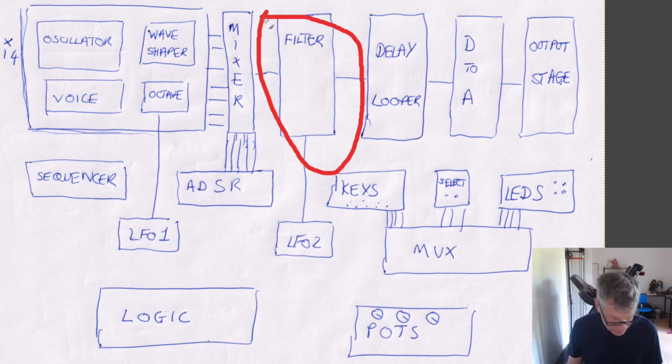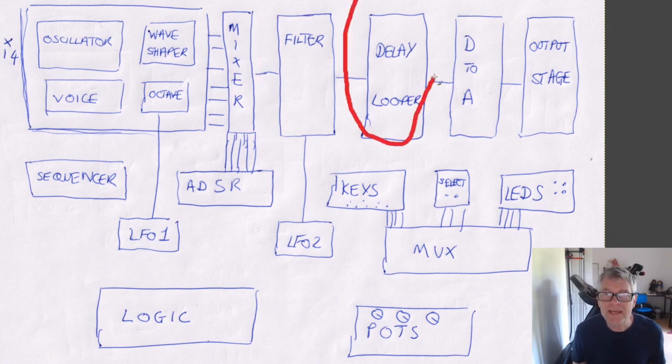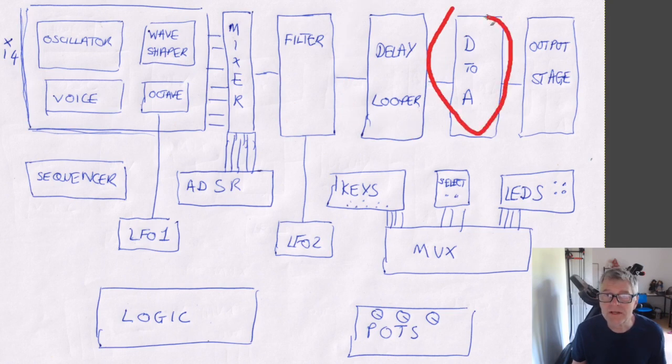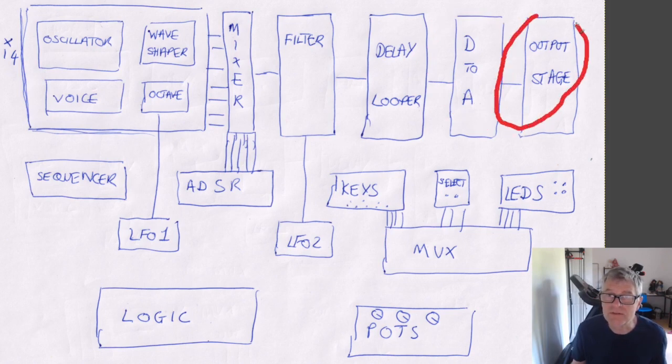And then there's the filter section. This is a low-pass filter, and it just takes away some of the sharp, edgy noise from the saw and triangle waves. There's a delay. I mean, everything always sounds better with a bit of reverb. It's quite a simple delay, and it can be either just a single delay or actually a loop. Final thing on this section is the digital-to-analog converter and then output stage, which sends the voltage out to a line output type of jack.